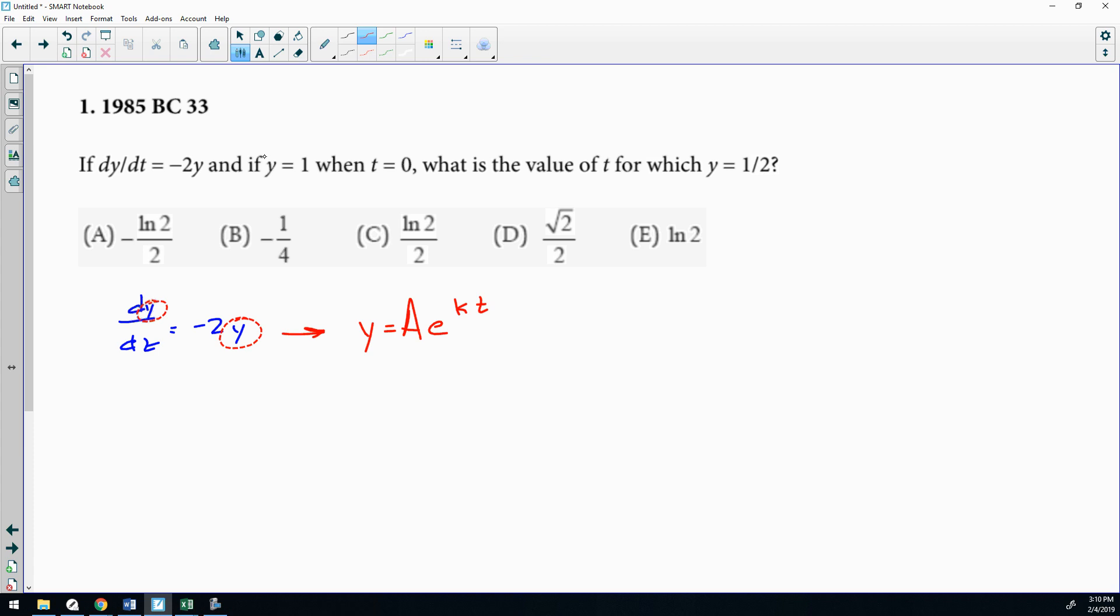Now on this particular problem, they gave us an initial condition: y equals 1 when t equals 0. So this should satisfy the initial condition (0, 1), and that will allow us to solve for A. Then it says find the value of t for which y equals 1/2. So we have a couple of situations there that we can use to solve this. I'm going to pause the video and solve it really quick, and we'll look at the solution.